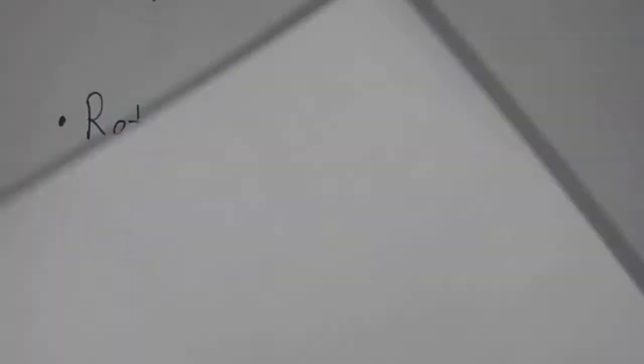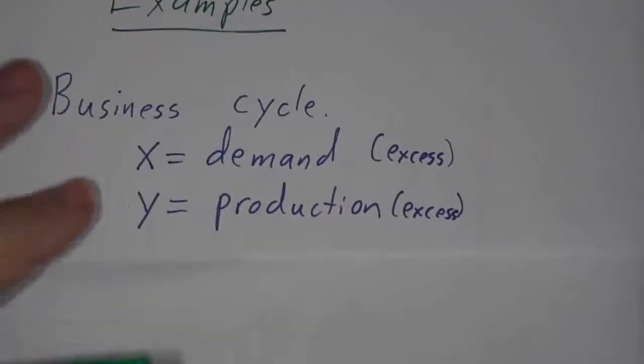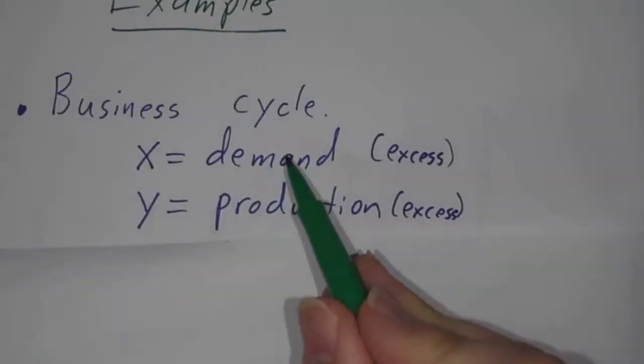So, a few examples in the real world. One is the business cycle. If you have excess demand for a product, that's going to push the price up. If the price goes up, people are going to say, I can make money by making this product. And that's going to increase production. But once you have lots of production, people are going to be able to buy all of the stuff they want. They're going to fill their houses with it, and they're not going to be interested in buying anymore. So demand is going to drop. The bigger production is, the less demand there is, because the demand has all been fulfilled.